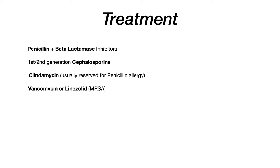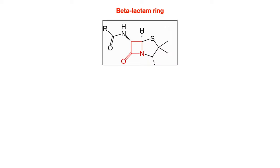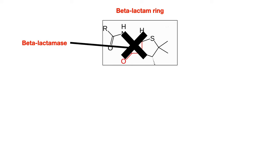Beta-lactam antibiotics — penicillins and cephalosporins — are called that because they contain a beta-lactam ring, shown in red in the chemical structure. The problem is that beta-lactam antibiotics are susceptible to beta-lactamases. Beta-lactamase, as the name implies, cleaves the beta-lactam ring, rendering the antibiotic completely useless. So if you try to treat a pathogen that produces beta-lactamase, like Staph aureus can, the antibiotic gets destroyed.